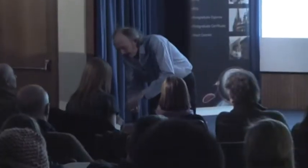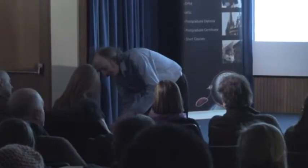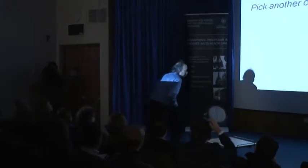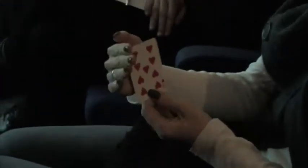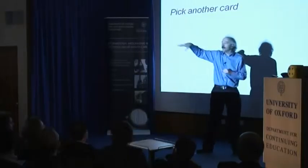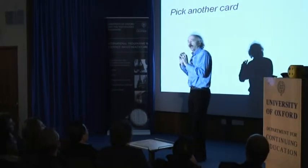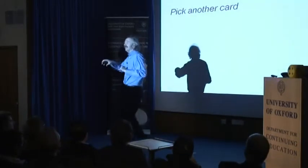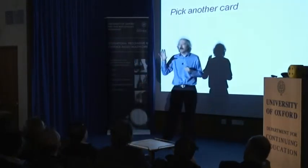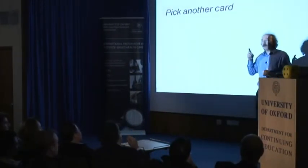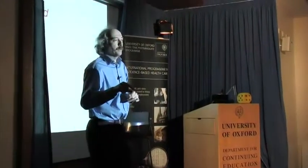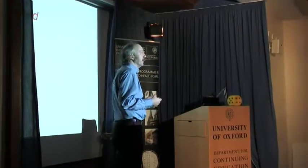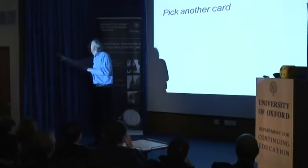A volunteer from the front row picks a card. The speaker riffles the deck and asks them to stop and take a card, making clear they don't want to see it. The volunteer looks at the card and shows it to a small group in one corner of the audience — about a fifth or a sixth — while everyone else doesn't see it. Now everybody is asked to think of a card: the group who've seen the real card must think of that one, while the rest of the audience thinks of any card they like.